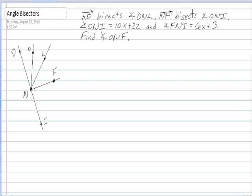All right, now our givens suggest that angle ONI is 10x plus 22, and FNI is 6x plus 3. So it's a good idea to sketch out the picture, just the parts that you need.